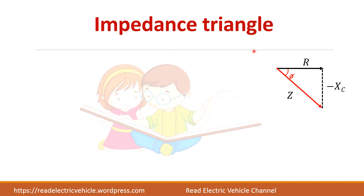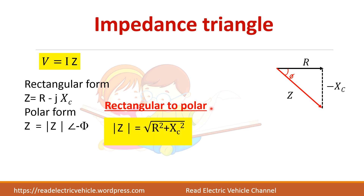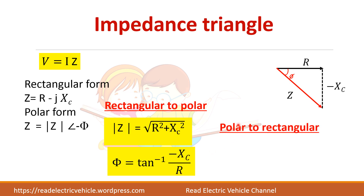Now we will draw the impedance triangle. The resistance is R, and Xc is represented as minus Xc, and the impedance Z makes an angle phi. For an RC circuit, phi will be negative. In rectangular form, impedance is written as R minus j Xc; in polar form it is Z angle minus phi. Converting rectangular to polar: magnitude is root of R squared plus Xc squared, and phi equals tan inverse of minus Xc by R. Converting polar to rectangular: cos phi equals R by Z and sin phi equals minus Xc by Z.